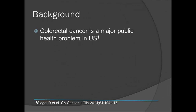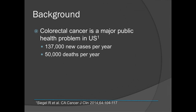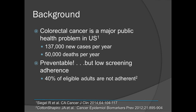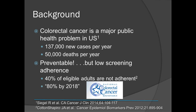Colorectal cancer is a major public health problem in the U.S. The numbers are pretty staggering: 137,000 cases per year, leading to 50,000 deaths per year. The good news is that it's preventable through screening. But unfortunately, people just do not engage in screening practices. It's estimated that 40% of eligible adults are not adherent with colorectal cancer screening. There are efforts like the 80% by 2018 campaign led by the National Colorectal Cancer Roundtable to hopefully improve these rates.